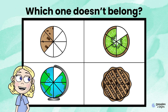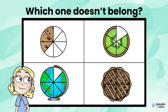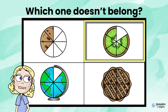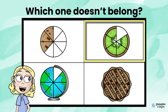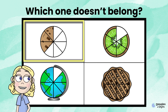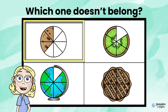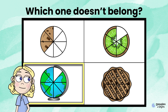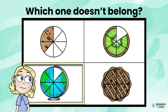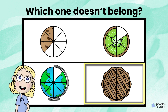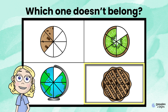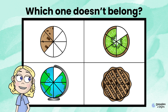Here are some possible things that you could have chosen. You could say that the kiwi doesn't belong because it's the only fruit. Or you could have said that the cookie doesn't belong because it's the only fraction that is showing less than one half. You could have said that the globe doesn't belong because it isn't food. And you could have said that the pi doesn't belong because it is equal to one whole while everything else is less than one.